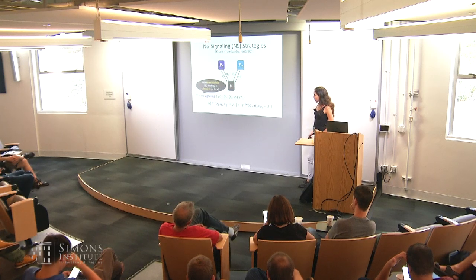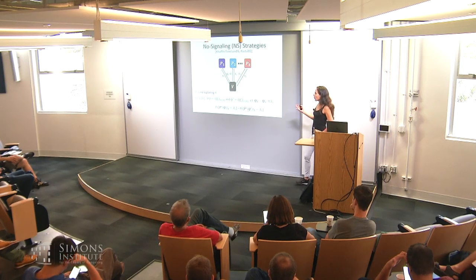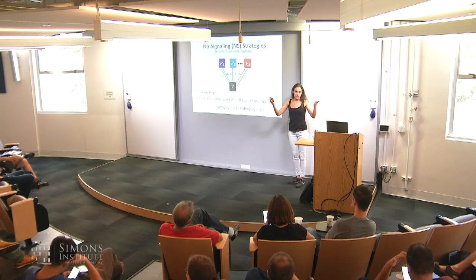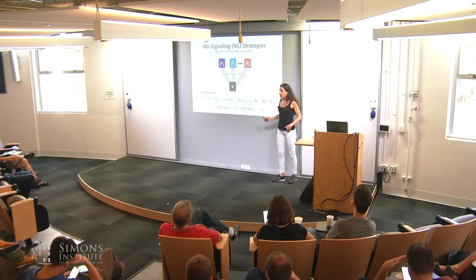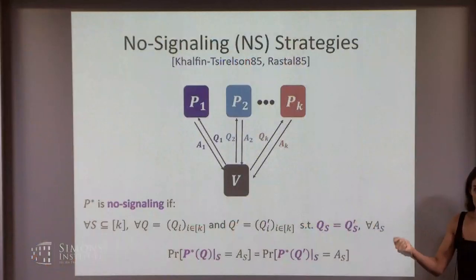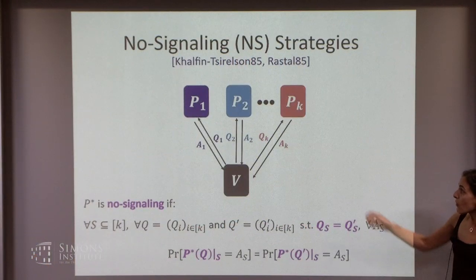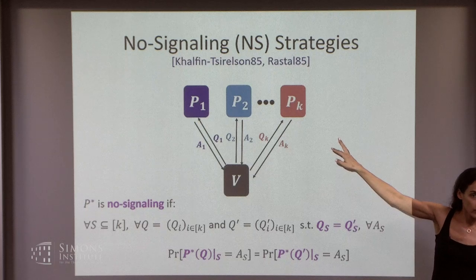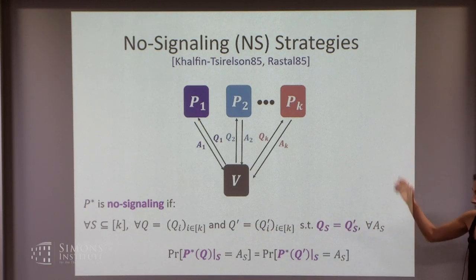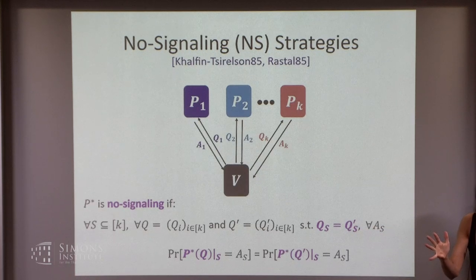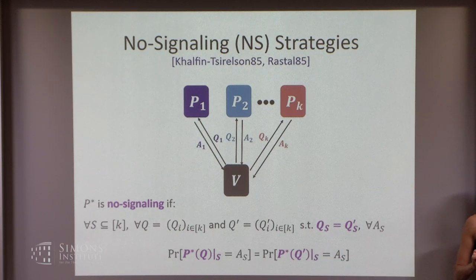More generally, we define no-signaling for k provers, similar to the classical MIP. In the k-prover setting, the requirement extends in a natural way: for every subset S of the provers, for any two vectors of queries that agree on S, the distributions of their answers should be the same no matter what the other queries are.